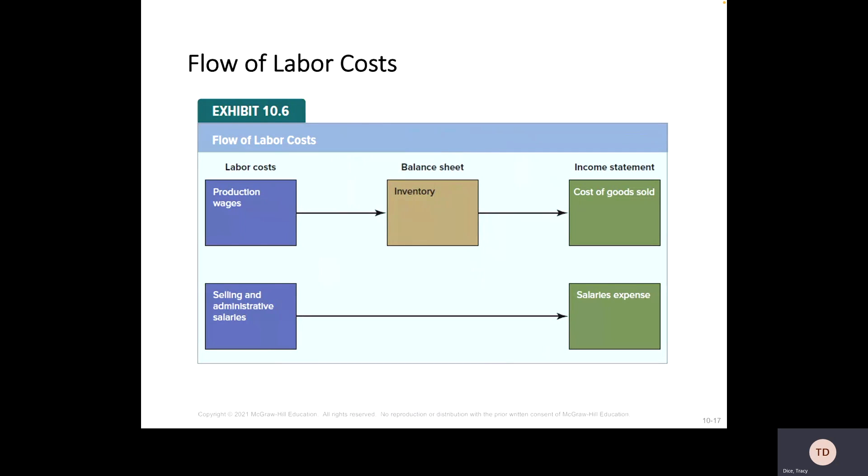So the flow of the costs, we typically see labor, if it's your production wages, so it's your people that are actually making the products, that's going to go into your balance sheet as inventory and then to the income statement as cost of goods sold. If it has not been sold yet, it's stuck in the inventory account in the balance sheet. Your selling and administrative fee, so your salesmen, your managers, their salaries go directly into the income statement. They don't have to wait in an asset account in the balance sheet at all.